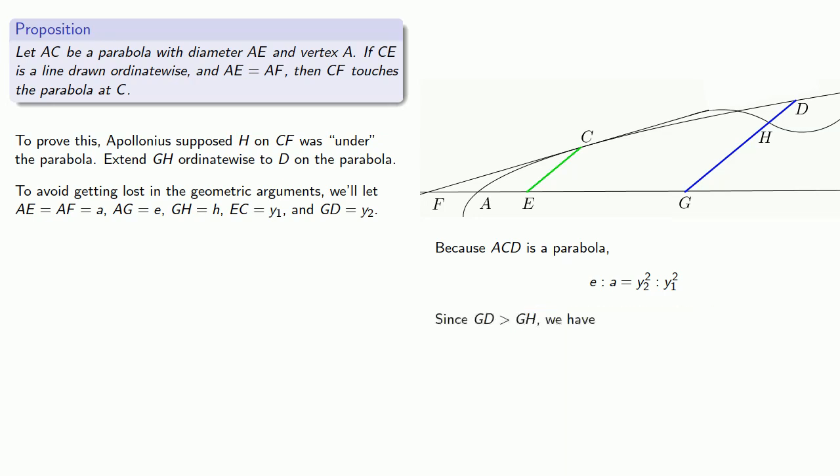But since GD is greater than GH, then Y2 squared to Y1 squared is greater than H squared to Y1 squared. Which means that E is to A is greater than H squared is to Y1 squared.